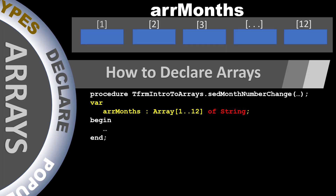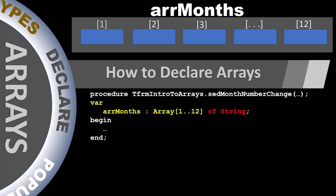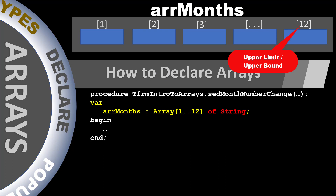This is like grouping the 12 variables we saw earlier into one big data structure with one name instead of 12. We will reference all the months by the same name — in this case ARR months. Each item in the array is called an element, and Delphi assigns a number to each element called an index. This array stores elements 1 to 12, so the first element has an index of 1 and the rest follow in ordinal sequence up to index 12. The lowest number is called the lower bound, and the highest number — in this case 12 — is called the upper bound.